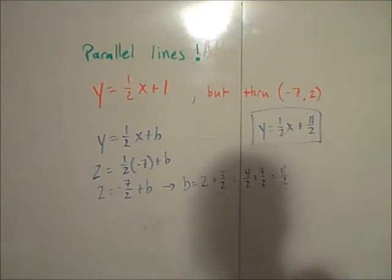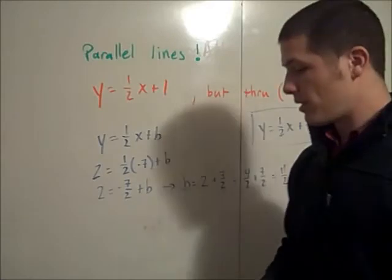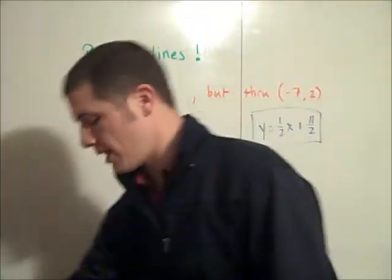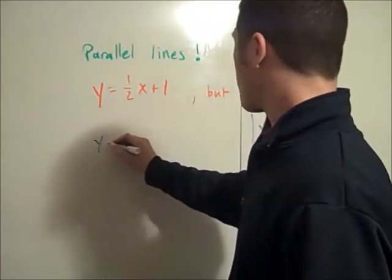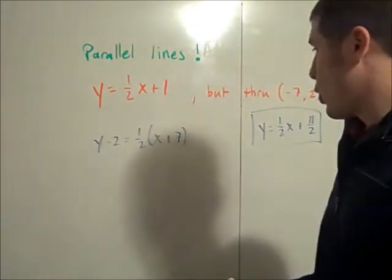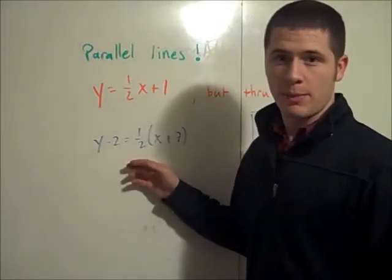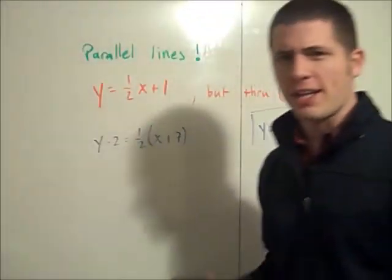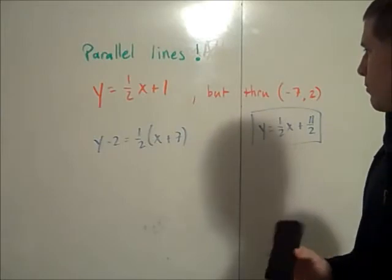Now if you know point-slope form then this becomes a bit easier because the point-slope form of the line would be just y minus 2 equals 1/2 times x plus 7. So if you know point-slope form you can use it and it makes it a bit easier. We don't spend a whole lot of time on point-slope form at my school so we tend to keep things in slope-intercept form.